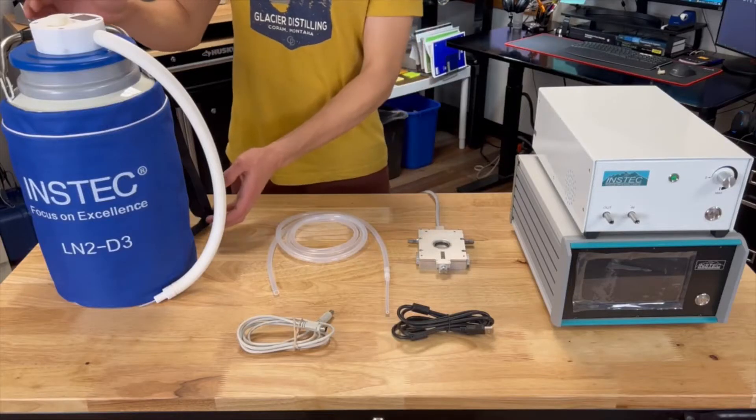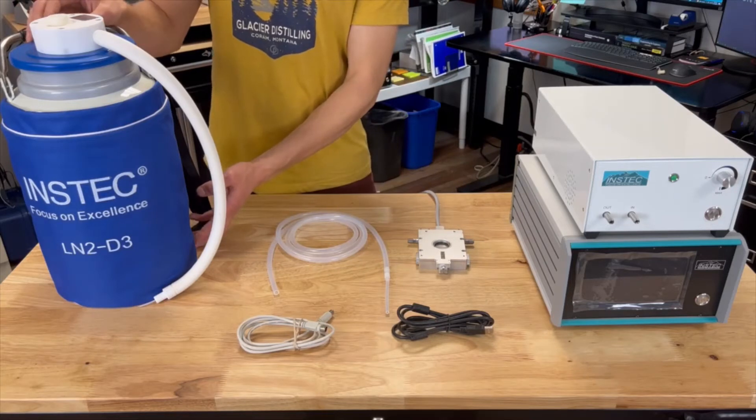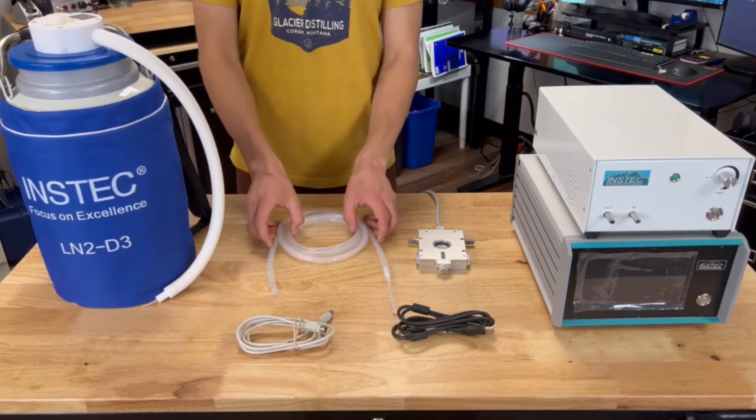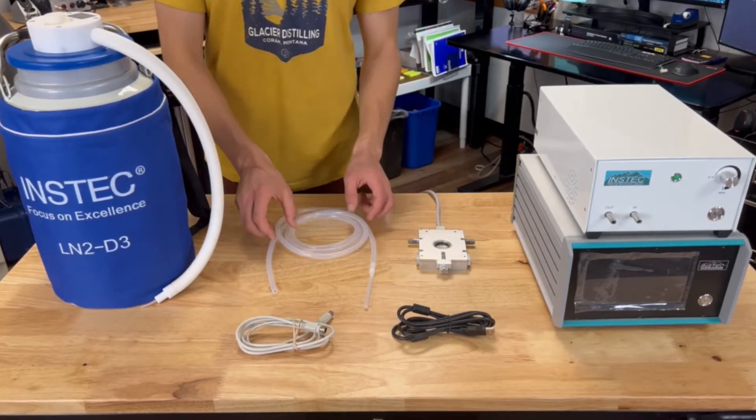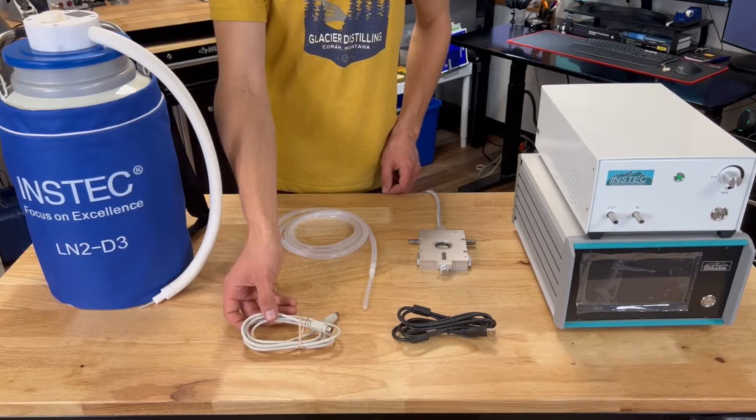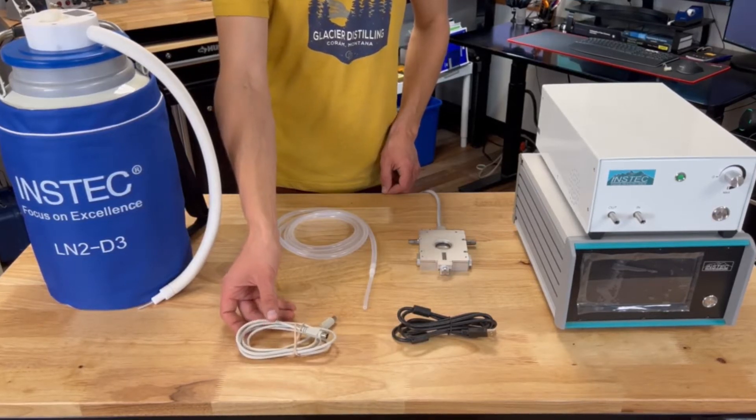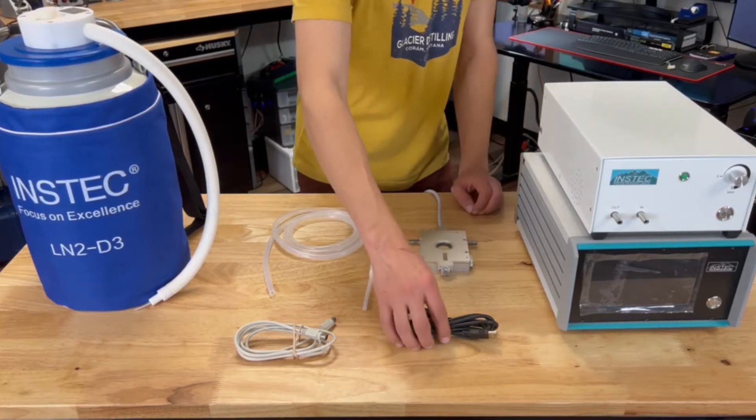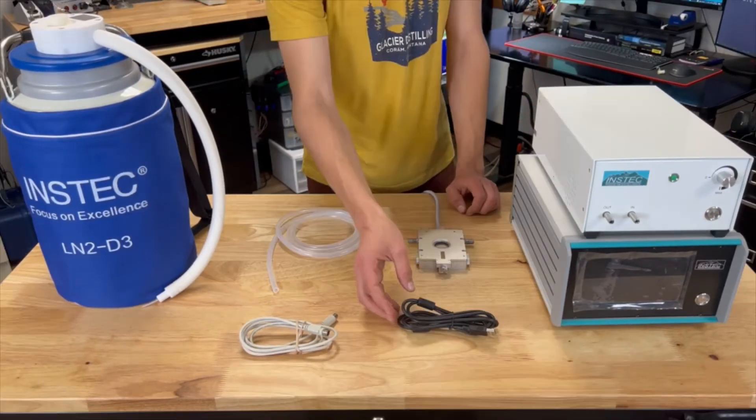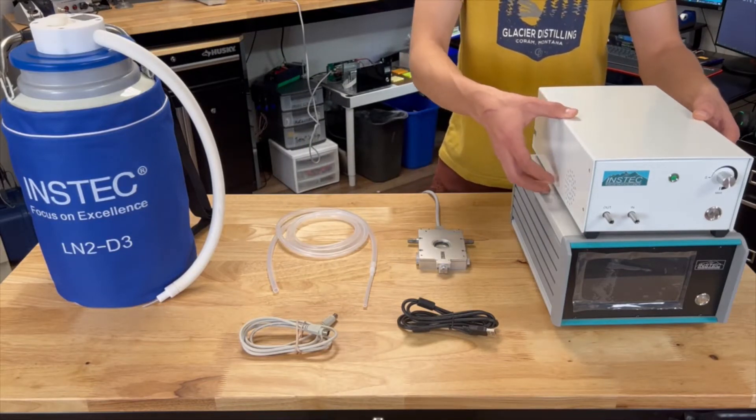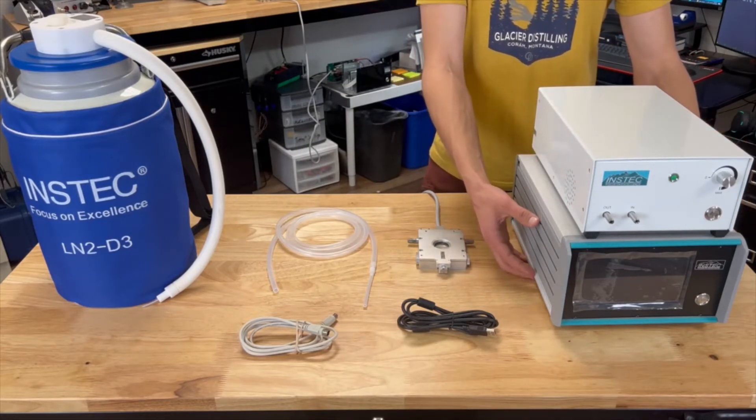Let's get started by introducing the liquid nitrogen system components consisting of a Dewar along with inlet tubing, the outlet N2 gas tubing, an I-O cable for communication between the suction pump and the temperature controller, a liquid nitrogen compatible INSTEC thermal plate, a power cable for both the temperature controller and suction pump, the LN2 suction pump (the sizing of which depends upon your application), and then of course your temperature controller.